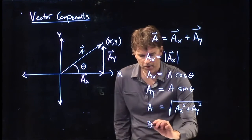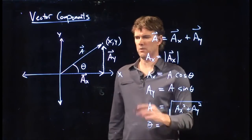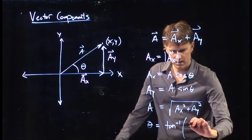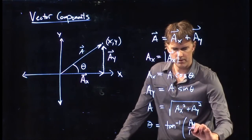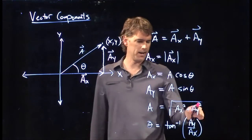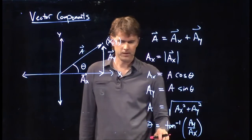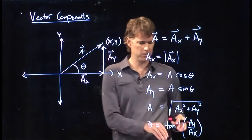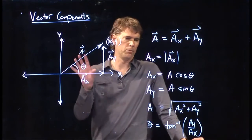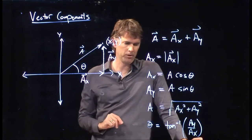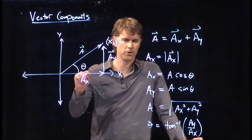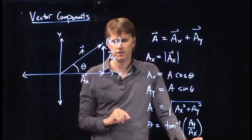And that angle theta, you can write in terms of any sides you want, but let's take the tangent. Therefore, the tangent of theta would give us A_y over A_x. So this is how you can define the parameters of this vector and break it out into components. Now we need to describe this in terms of unit vectors next.